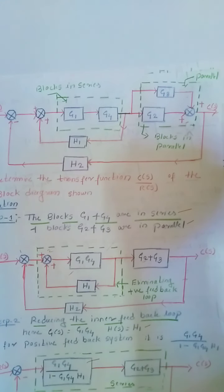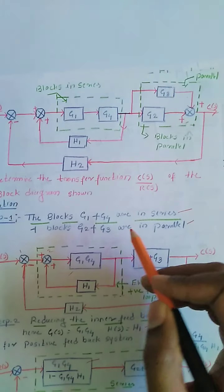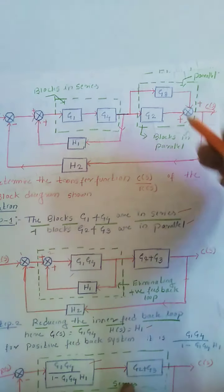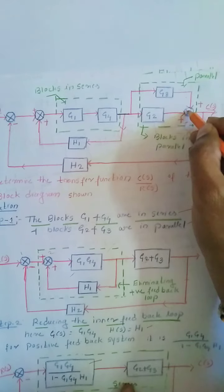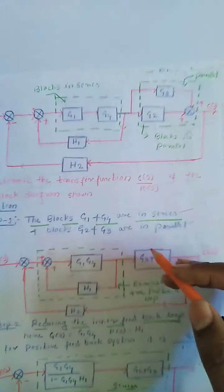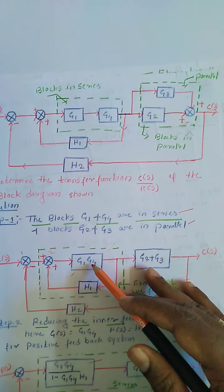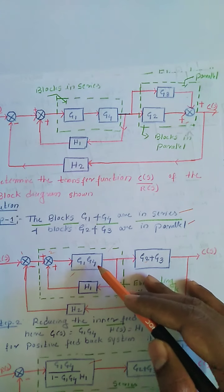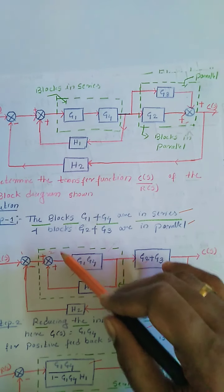The first step, as I mentioned, is to find the blocks in cascade, blocks in parallel, and the blocks in a loop. Blocks G1 and G4 are connected in cascade — multiply their individual transfer functions. Blocks G2 and G3 are connected in parallel — add their transfer functions based on the polarity of the summing points. After reducing the series and parallel blocks, the block diagram reduces to this form. G1·G4 and (G2+G3) will not be in cascade because there is a takeoff point. Since the output of G1·G4 is connected to a summing point via a feedback element, this forms a loop.